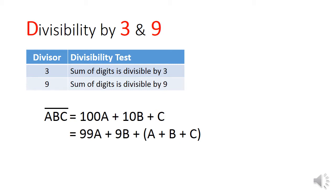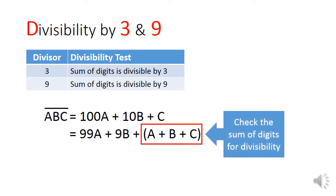You then regroup the expression into two parts. 99a with 9b as one group, you can see that this part of the expression is clearly divisible by 3 or by 9. Hence, we only need to check the second group, a plus b plus c, which is the sum of the digits. If the sum is divisible by 3, the entire expression would also be divisible by 3. And the same goes true for 9.